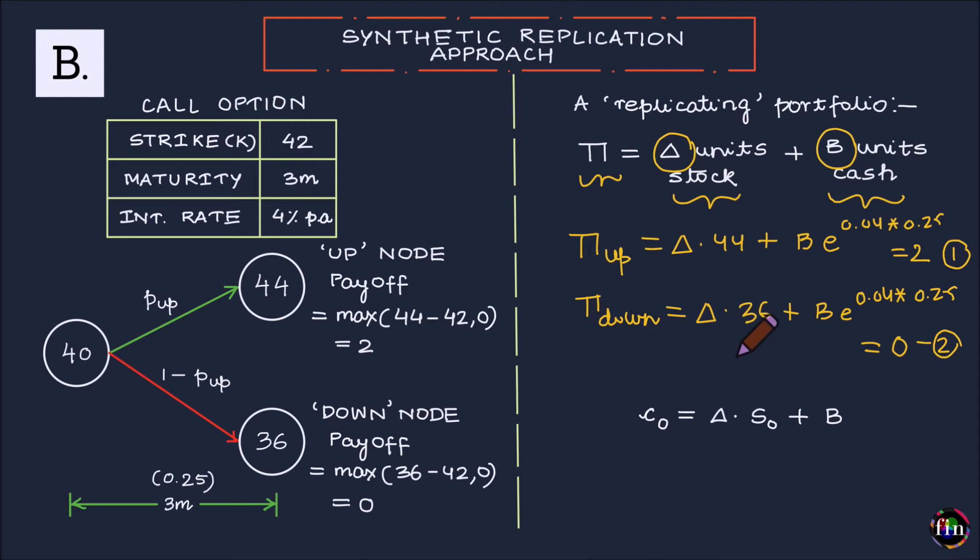If I am guaranteed that both these equations are satisfied, it means that I have indeed created a replicating portfolio. I have indeed created this particular European call option in-house. Two equations in two unknowns. Please solve these two equations and you will find that delta comes out to be 0.25 and B comes out to be minus 8.9104.